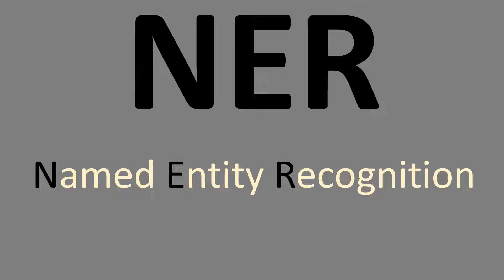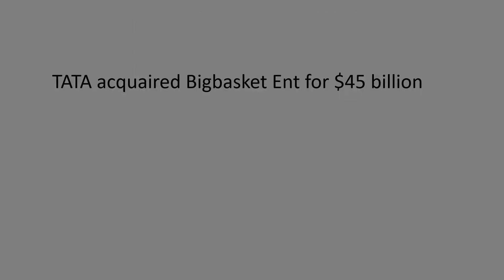Let me give you an example. Let's say you got a piece of information from a news article that says 'Tata Group acquired BigBasket Enterprise for 45 billion.' If you've built a model to name and recognize organizations, then Tata and BigBasket Enterprise are both organizations. These two can be tagged as organization, and whenever the model finds these entities in any input, it will identify them.